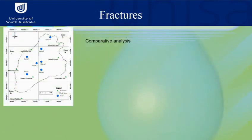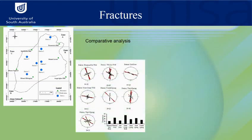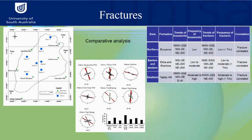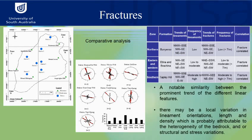We then verified the linear features extracted from geologic maps and remote sensing through field study. This involved studying fractures and joints at seven stops in the study area, measuring orientation in terms of strike and dip. We traced the orientation using rose diagrams and compared traced versus measured fractures in tables. We found a similarity between the trends of the different linear features, with local variation in lineament orientation, length, and density, probably attributed to heterogeneity of these rock types or structural and stress variation.